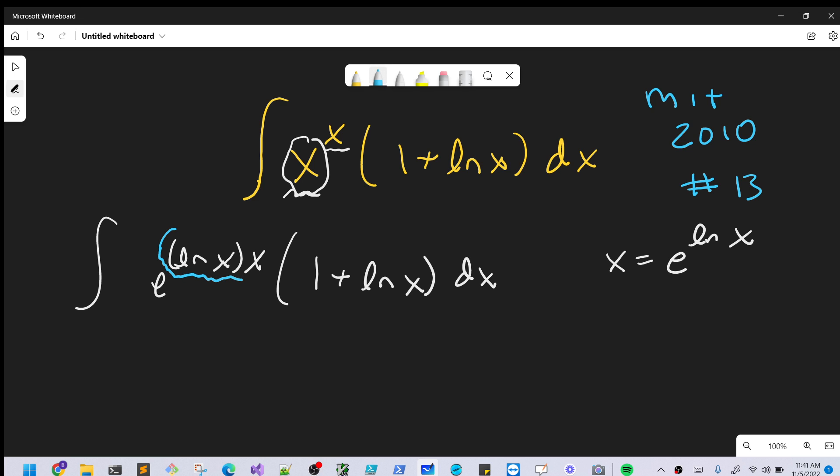We can just make this piece right here our u. Let's see what happens when we do that. So if we call u, I'm just going to change the order, x ln x, then to differentiate we're going to use the product rule.